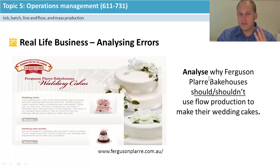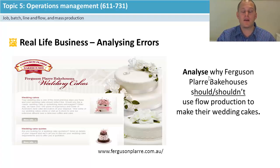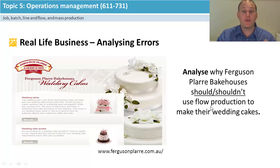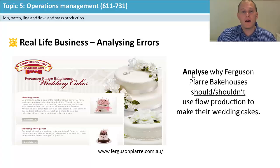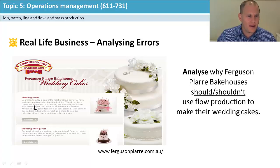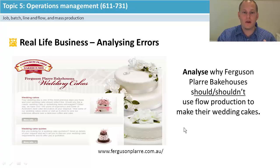Because it says 'analyze' this is a Level 3 question for six marks — you need one advantage and one disadvantage, plus a recommendation for two marks. I'd start by defining flow production: a continuous production method where there is no stopping between stages, designed to make large quantities of a standardized product. My case application would be Ferguson Plier Cakes — looking at the pictures, they're making wedding cakes.